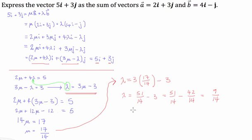To finalize this equation, it's asking us to express the vector 5i plus 3j as the sum of vectors a and b. So we can say that, therefore, this is our answer: 5i plus 3j is equal to, we had mu times vector a, we worked out mu to be 17 over 14 times vector a plus...